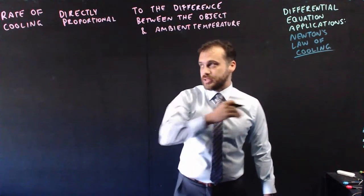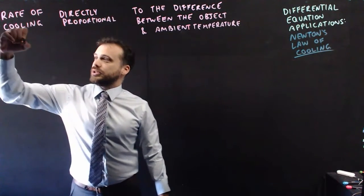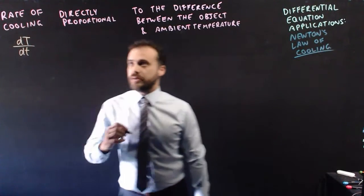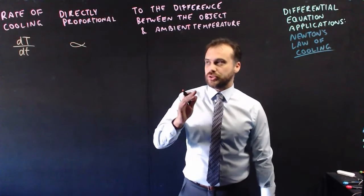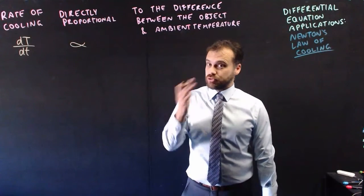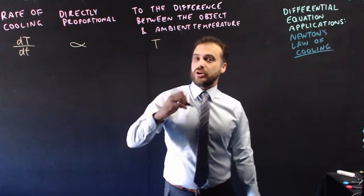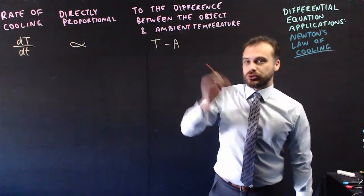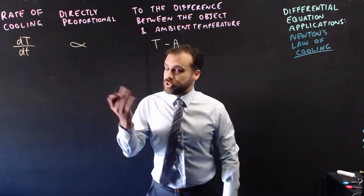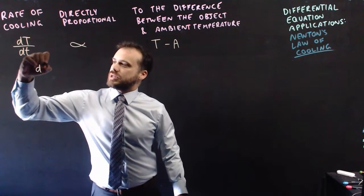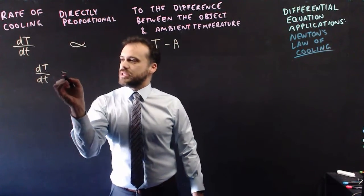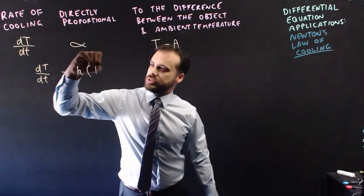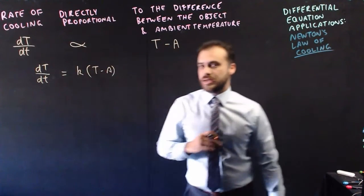We can put this into mathematics now. The rate of cooling, the rate at which temperature, capital T, changes with respect to time, is directly proportional to the difference between the temperature of the object minus the ambient temperature, what I'll call A. Now we can put this into a differential equation because we can say that the rate of change is equal to K times this difference, T minus A.